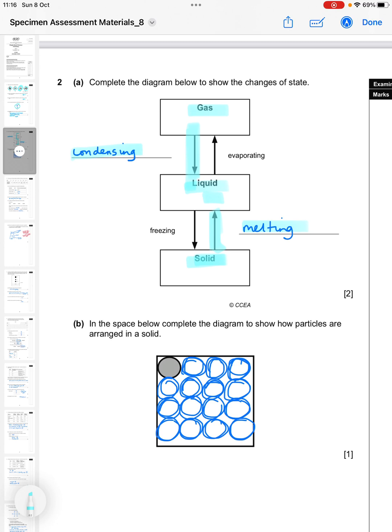In the space below complete the diagram to show how the particles are arranged in a solid. They've given you this gray particle to start you off, so it's just a matter of drawing the same size of particles nice and regularly arranged just to fill up that square. They should all be touching and they should all be nicely lined up in little rows like that.